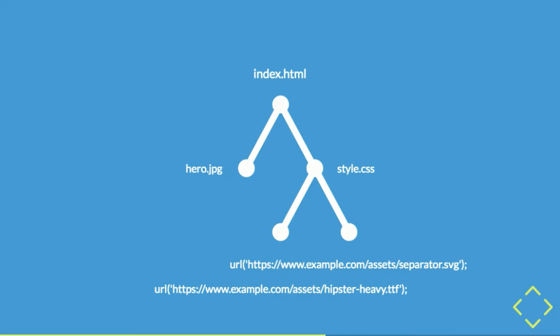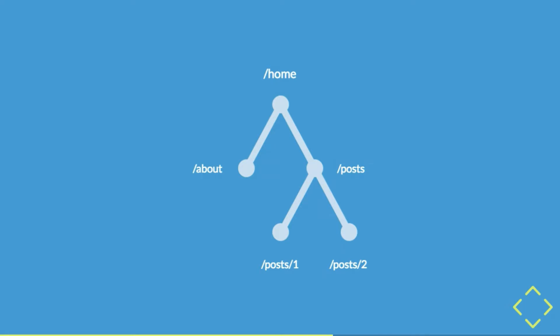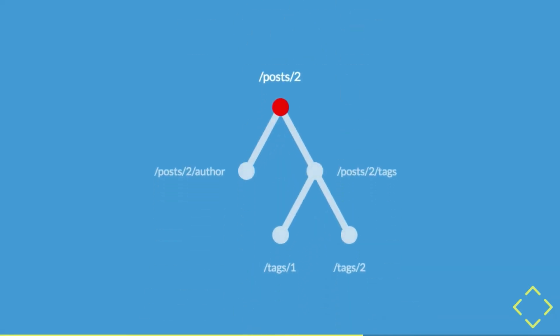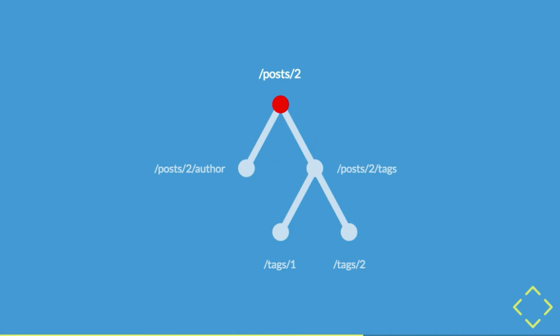We're used to thinking of the web more like this: there's a homepage, another page with posts or about links, and those link to individual posts. We're on the homepage, we click a link to the posts page, and the graph reorganizes — now more of the web is revealed. We see post one, post two. If we follow post two, we get the post's author and tags. We could keep traversing that web, moving through the graph, driven by hypermedia, driven by links.